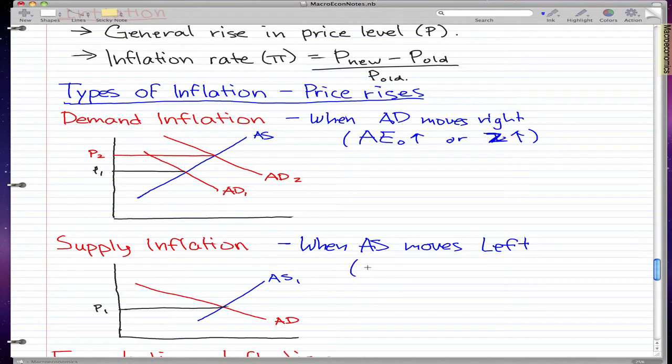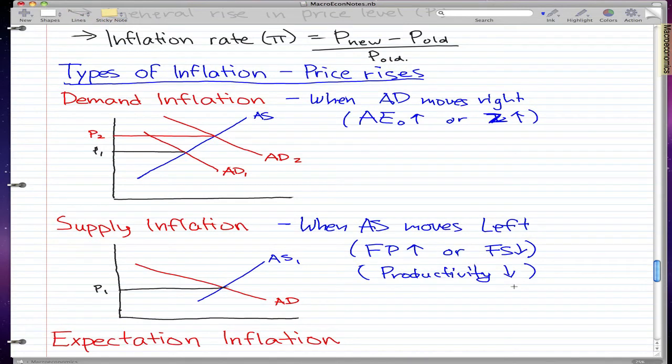One of two things happen: the factor prices increase, or the factor supply decreases. In all cases, productivity decreases, because if your factor prices increase, then you're making less. If your factor supply decreases, then you're making less, so your productivity will decrease.